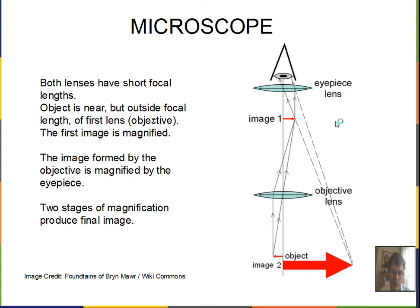The basics of the microscope that I would like you to know are that we have two converging lenses in a compound microscope. The objective lens is near the object. The eyepiece lens is near the eye.